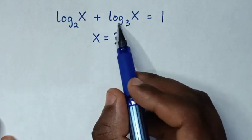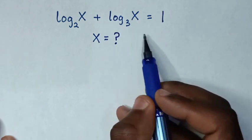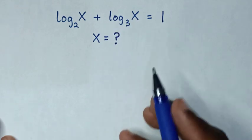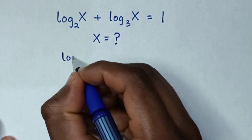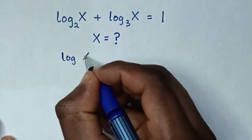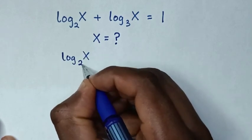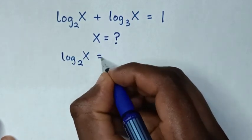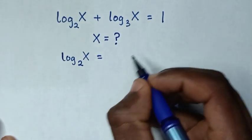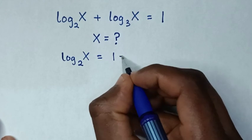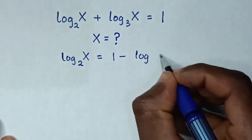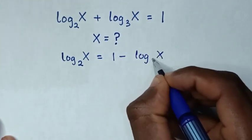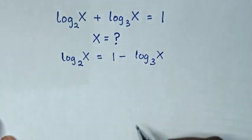First we take log of x base 3 to the right side. So it will be: log of x base 2 is equal to 1 minus log of x base 3.